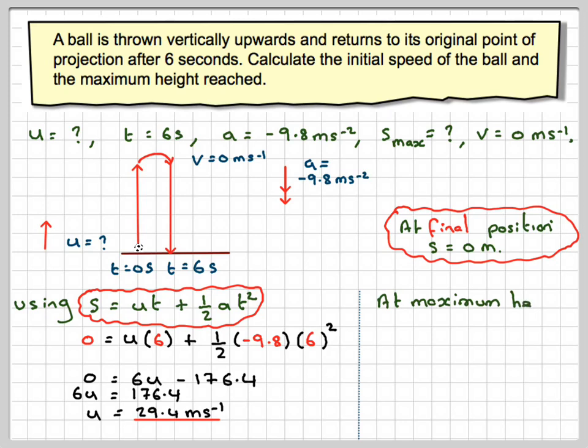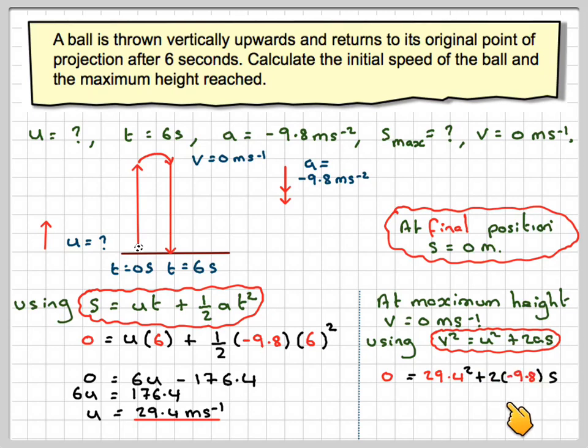For the maximum height, V will be equal to 0, because it will go up and hit 0, the velocity will become 0. So using V squared equals U squared plus 2AS, we're going to have 0 equals 29.4 squared plus 2 times minus 9.8 times S.